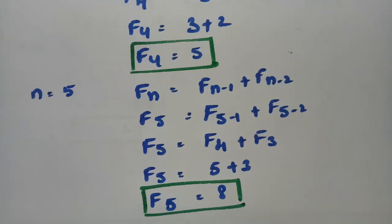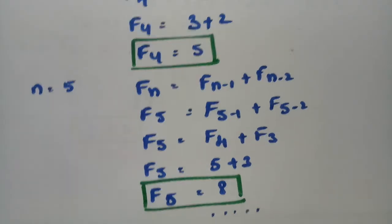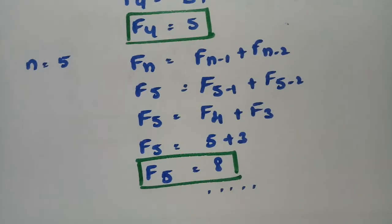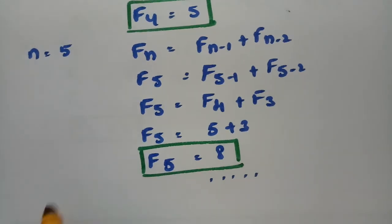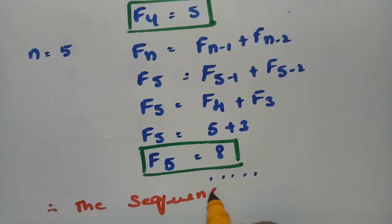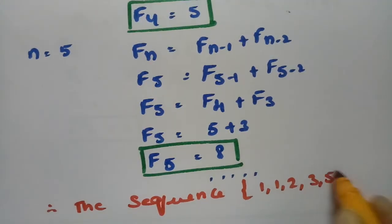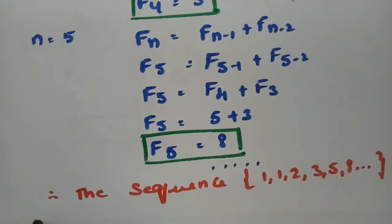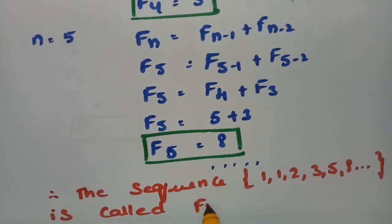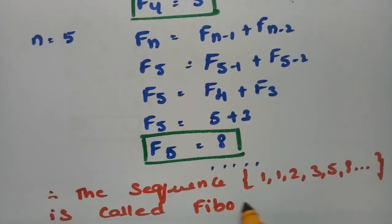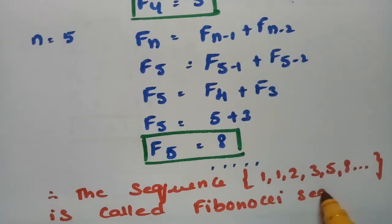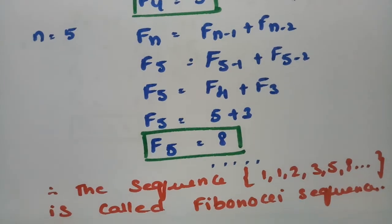If we keep substituting in this way, we obtain the sequence. Therefore the sequence is: F0, F1, F2, ... = 1, 1, 2, 3, 5, 8, and so on. This is called the Fibonacci sequence.